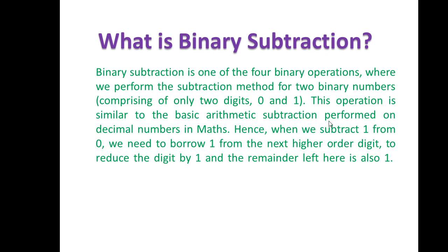This operation is similar to basic arithmetic subtraction performed on decimal numbers in maths, but since we are dealing with binary numbers we subtract using only 0 and 1. There are four rules, and whenever we subtract 1 from 0 we need to borrow 1 from the next higher order digit. This reduces that digit by 1 and the remainder left is 1.